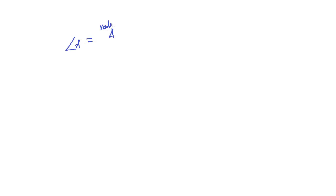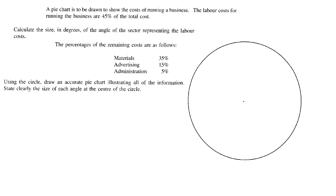Another use of the protractor is the pie chart. A pie chart is made of sectors of a circle where you find an angle that represents each particular sector. The angle of a sector is calculated as: angle = (value of that sector ÷ total value) × 360 degrees, because it's part of a full circle. Let's do an example.